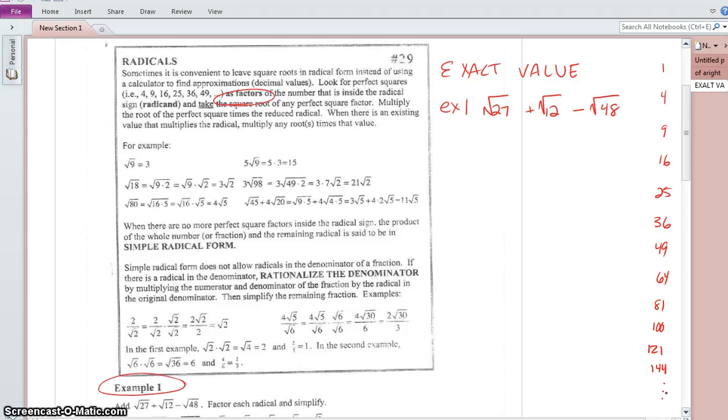And I'll be considering which of these perfect squares might be factors of these radicands, 27, 12, 48. So I'm going to start with 27. And I'm going to rewrite that as square root of 9 times 3, where 9 is a perfect square. The reason I'm rewriting that as square root of 9 times 3 is that I can then rewrite that as the square root of 9 times the square root of 3. Do you agree that this value is still equal to the square root of 27?